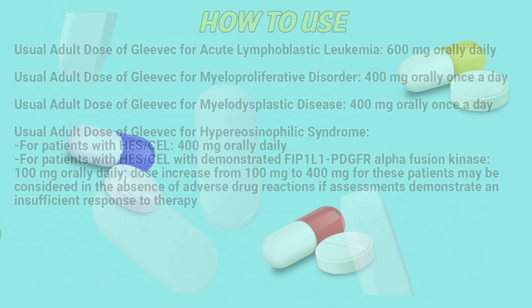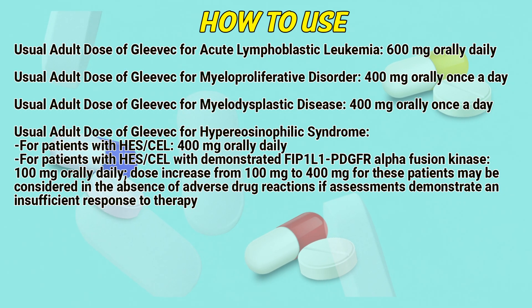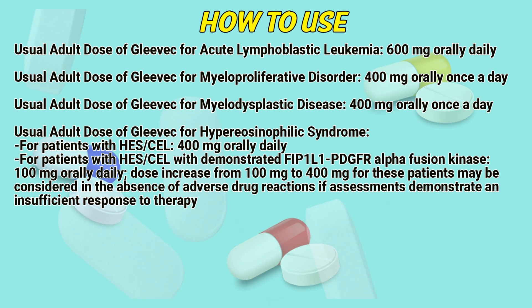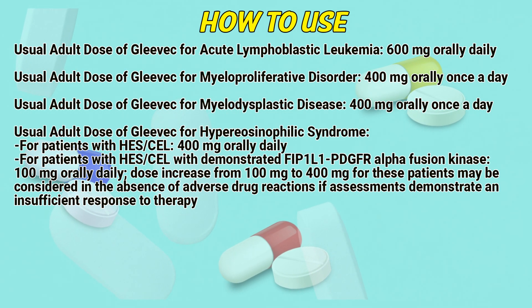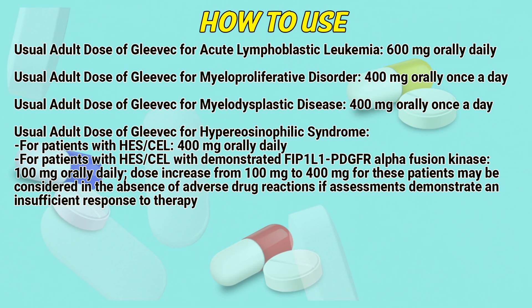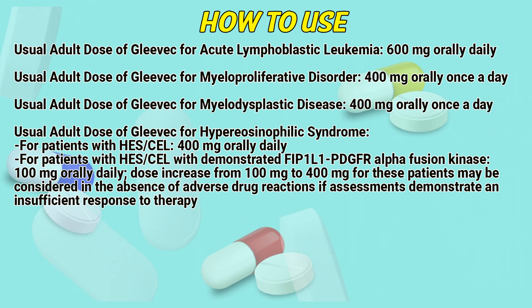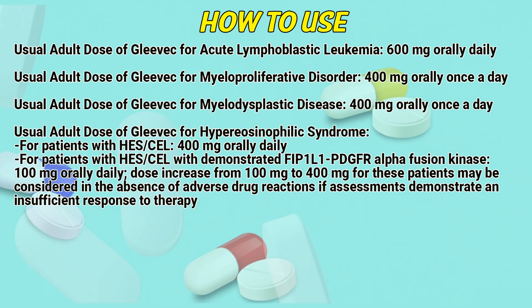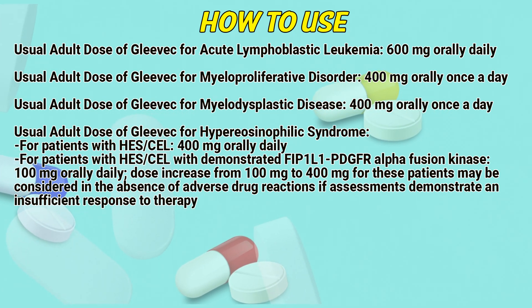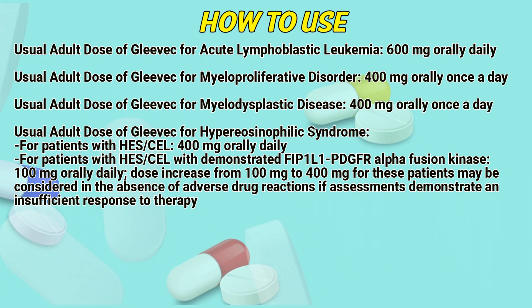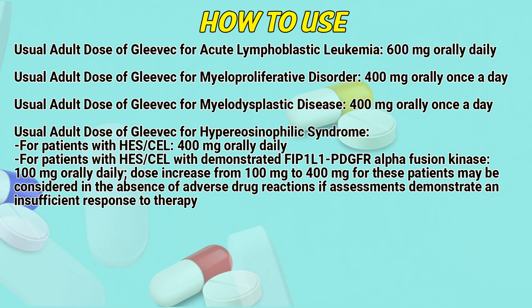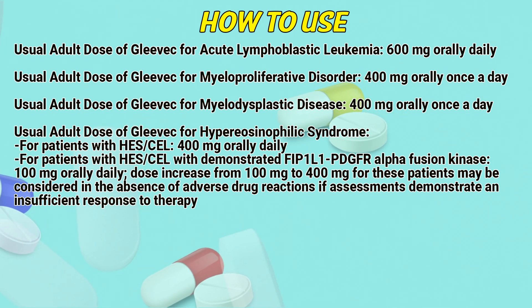Usual adult dose of Glivik for acute lymphoblastic leukemia: 600mg orally once a day. Usual adult dose for myeloproliferative disorder: 400mg orally once a day. Usual adult dose for myelodysplastic disease: 400mg orally once a day.